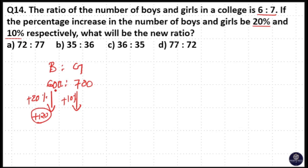So 600 plus 120 equals 720, which is your new number. Same way, 10% of 700 equals 70, then 700 plus 70 equals 770.